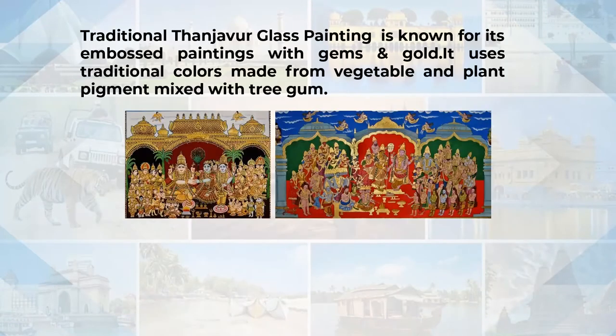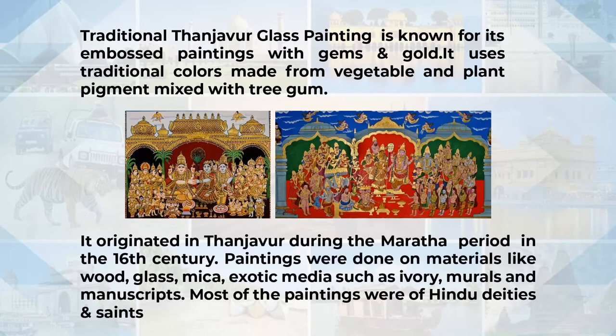Traditional Tanjavur glass painting is also very popular, known as embossed paintings with gems and gold. It uses traditional colours made from vegetable and plant pigments mixed with tree gum. This art originated in Tanjavur during the Maratha period in the 18th century. Paintings were done on materials like wood, glass, mica, ivory, murals and manuscripts. Most of the paintings were of Hindu deities and saints.